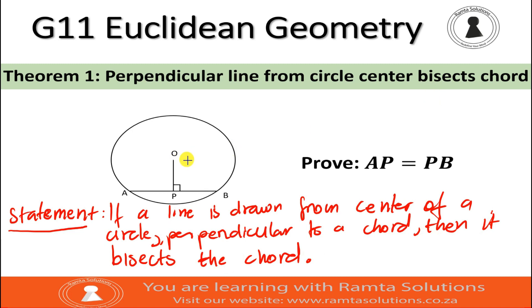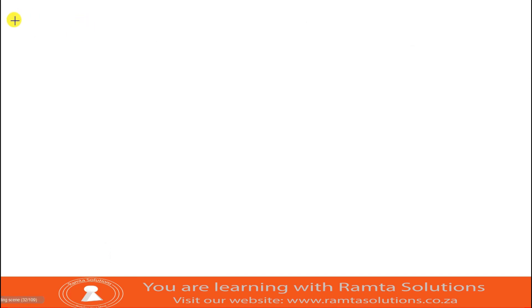So, here you are given center O with line OP that is perpendicular to chord AB. And you must prove AP is equal to PB. By the way, I should also give you the reason here. Whenever you quote this rule or this theorem, you will be saying perpendicular from center bisects chord.